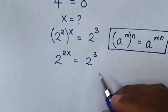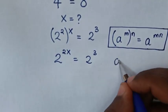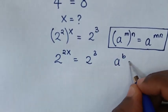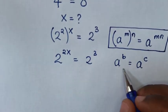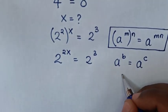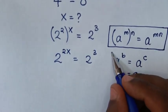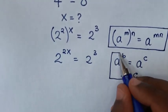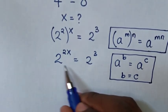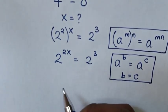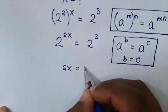In the next step, from this equation it is in the form of a power b is equal to a power c. So, because it has the same base, we will compare the powers, so b is equal to c. From our equation, because we have the same base but different powers, we will compare the powers: 2x is equal to 3.